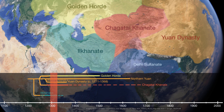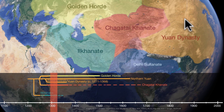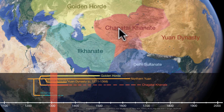Where we left off in the last few videos, we saw the empire of the Mongols fragment into the various Khanates. In the east, you have the Yuan Dynasty, established by Kublai Khan. And then in the west, you have the Golden Horde, the Chagatai Khanate, and then the Ilkhanate in much of the Middle East and Persia.